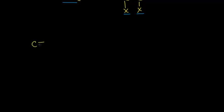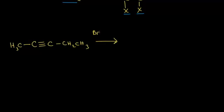Let's look at a practice alkyne. Here I have a carbon triple bonded to another carbon, with a methyl group on one side and an ethyl group — CH2CH3 — on the other side. To that alkyne, I'm going to add bromine using carbon tetrachloride as my solvent, with one molar equivalent of bromine added.